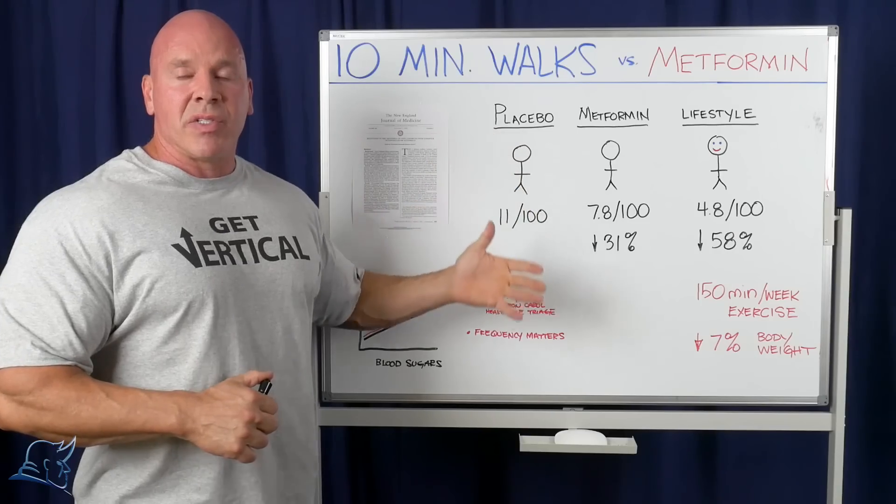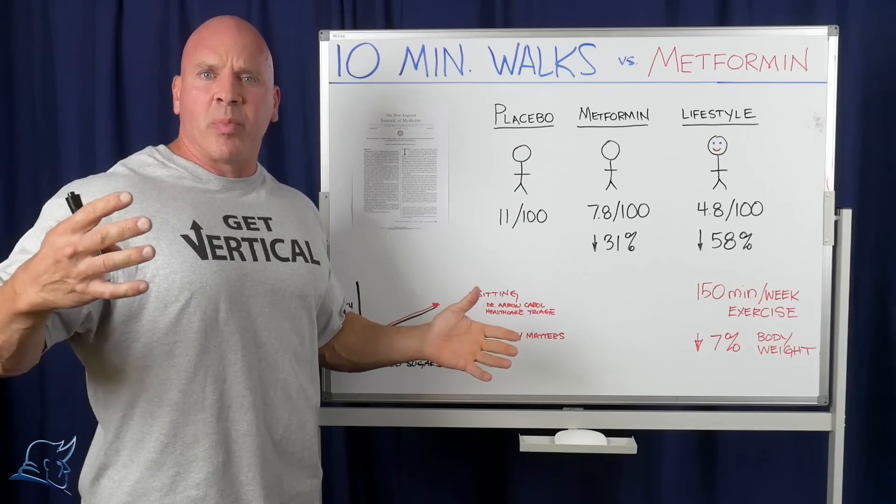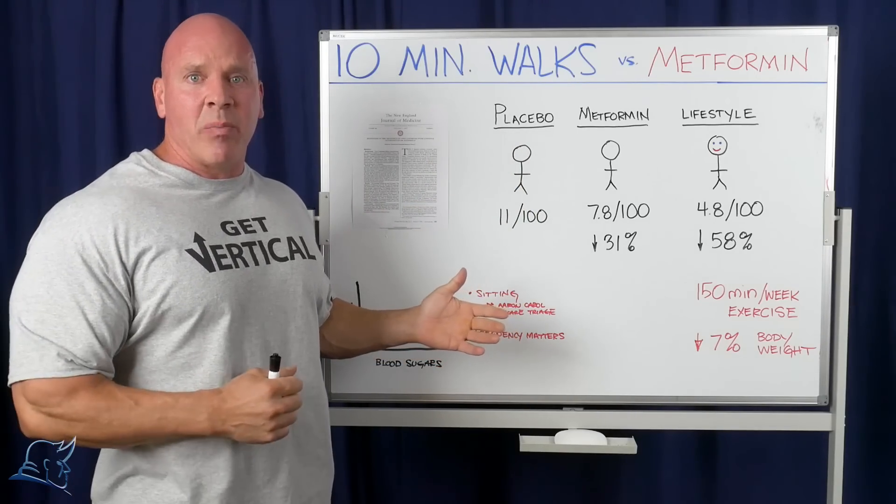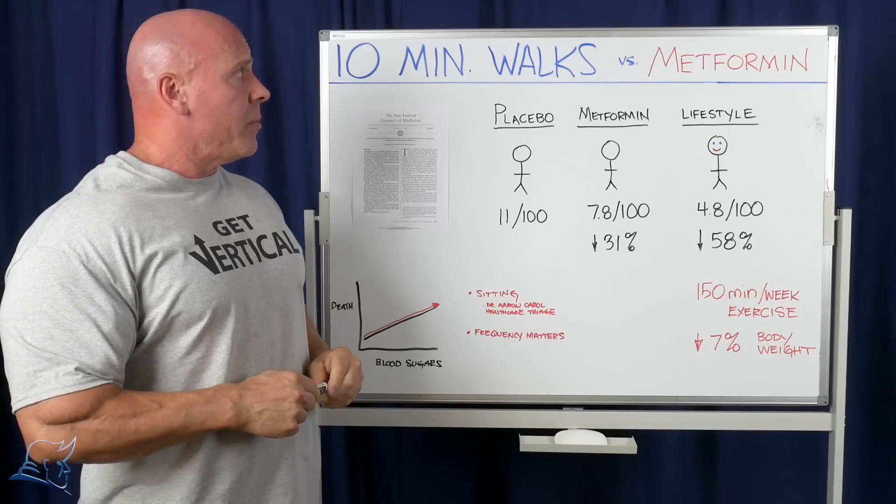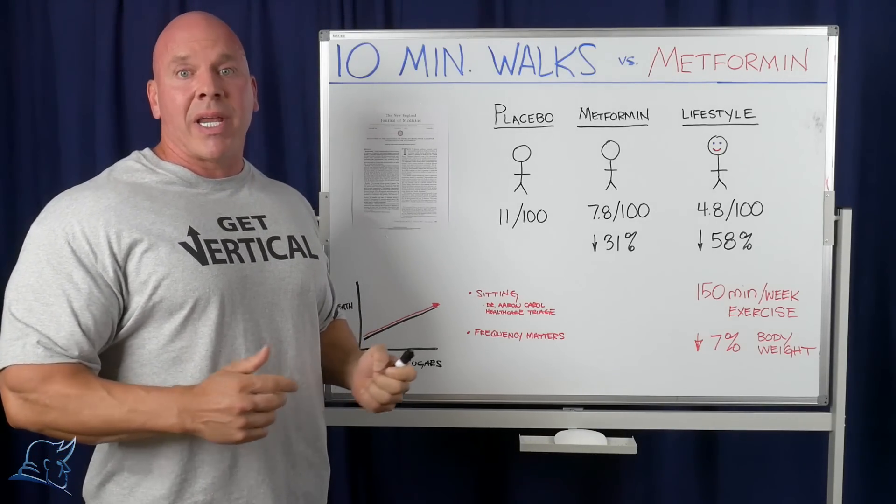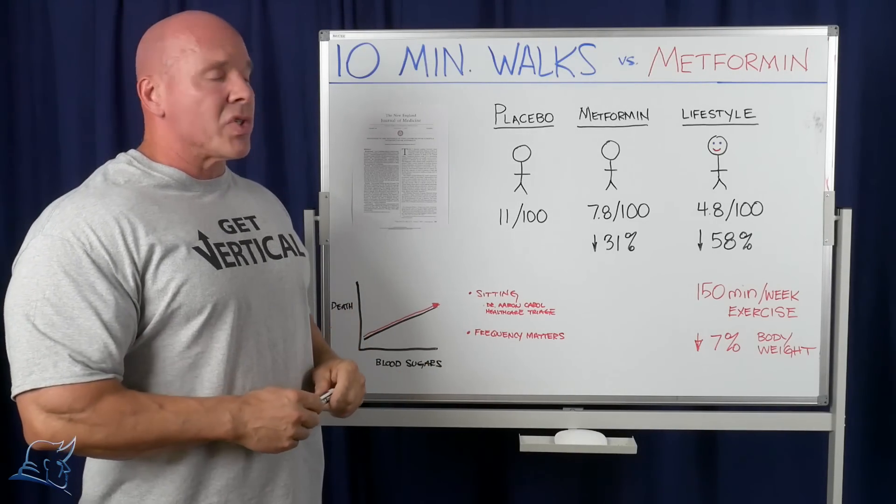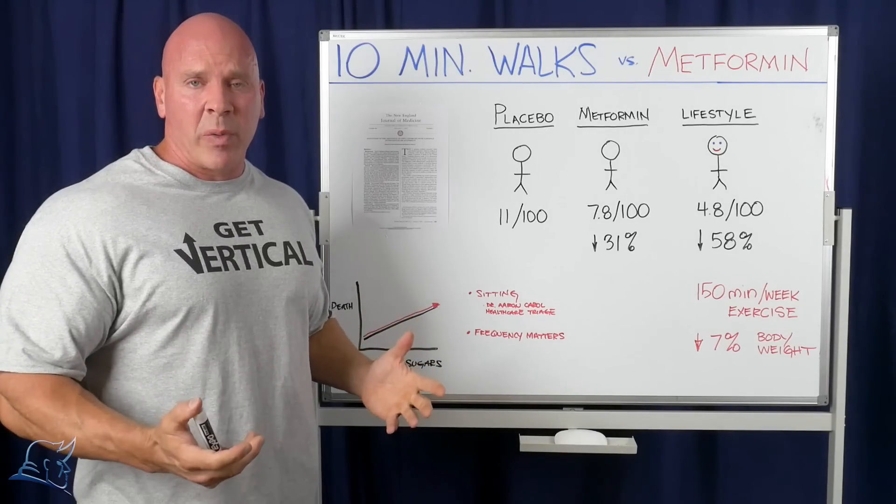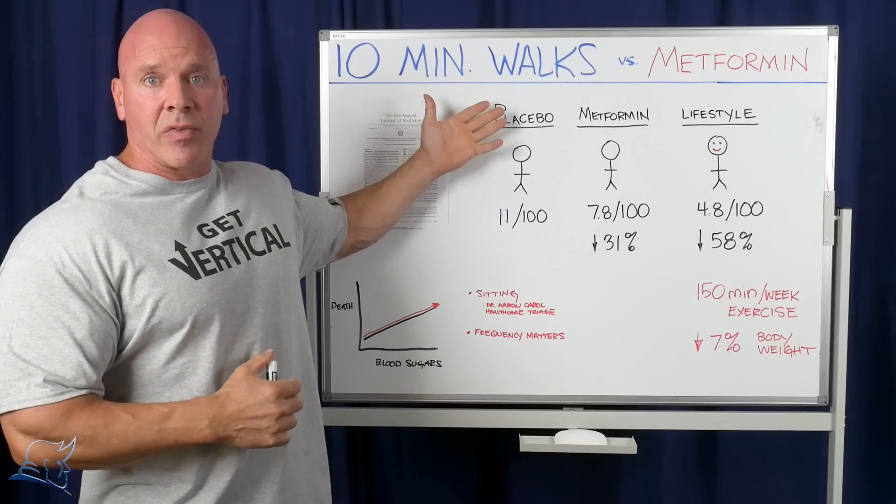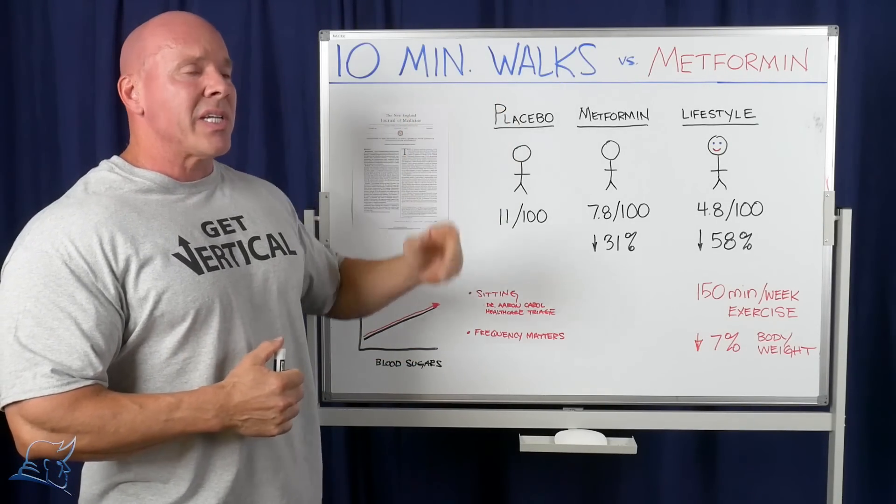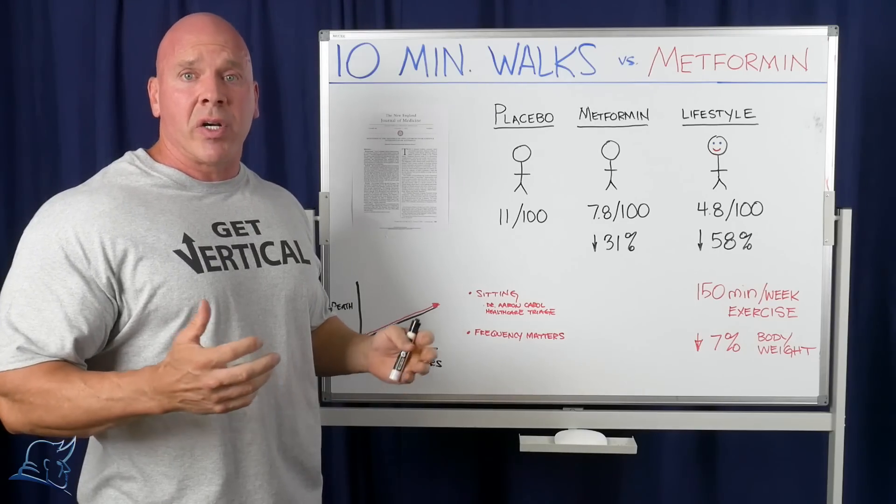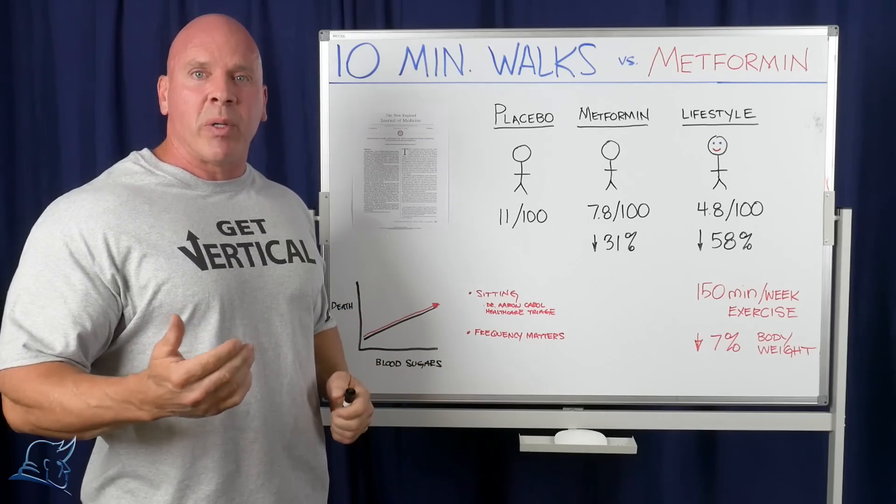Their HA1C is 5.1. Diabetes or pre-diabetic starts around 5.7, 5.8. And their resting or fasted blood glucose is 83. So those are some extraordinary numbers for people who weigh over 400 pounds. And all they're implementing in terms of actual cardiovascular fitness is 10-minute walks post-meal. Because they're extraordinarily effective at controlling blood sugars.